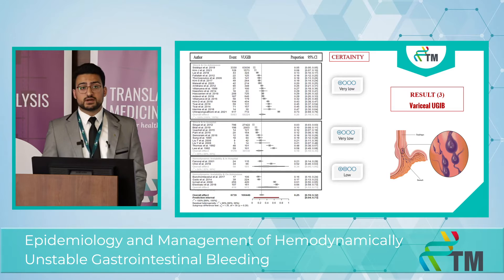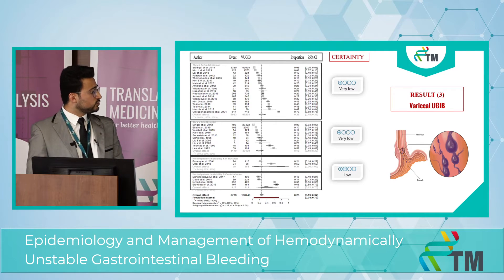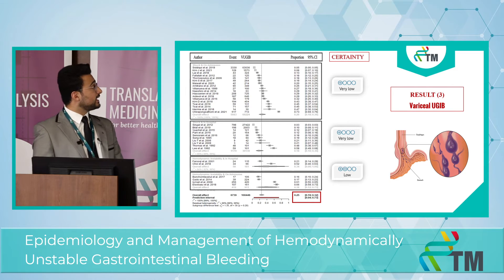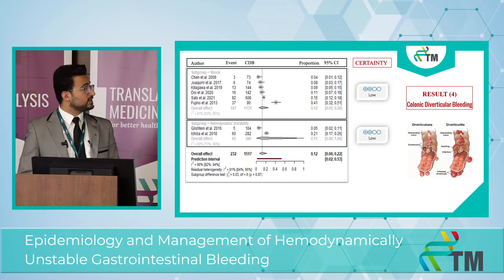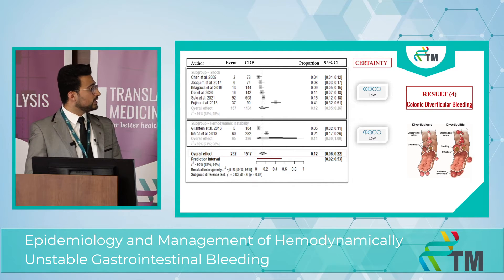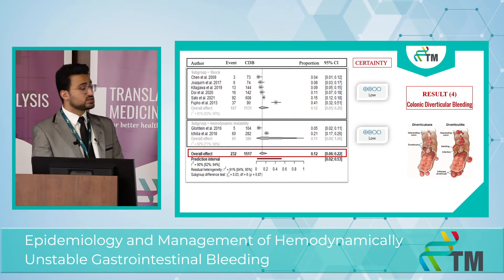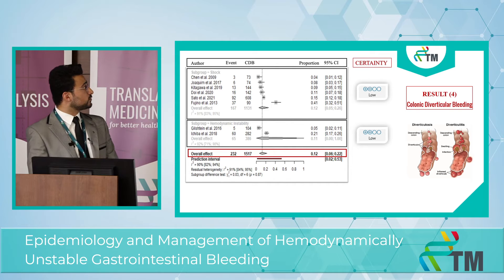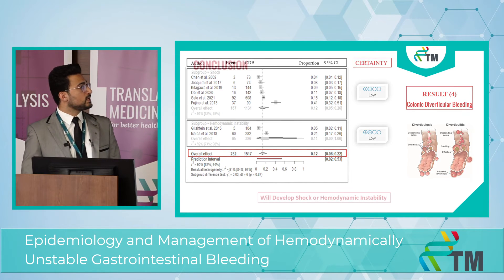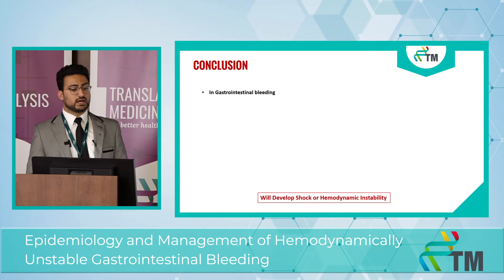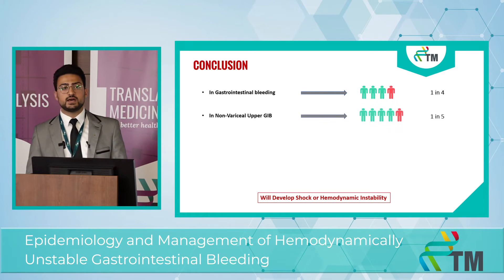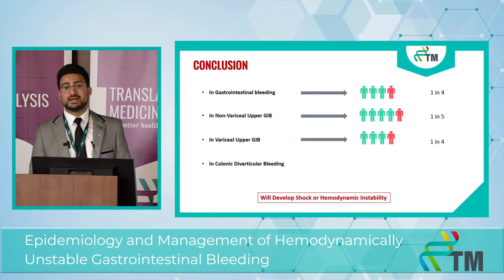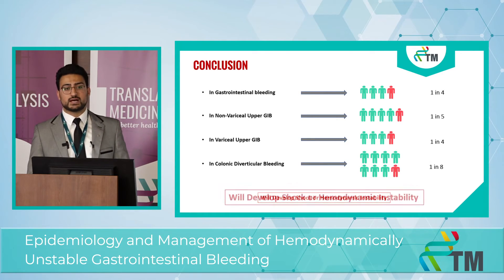In variceal bleeding, being a more severe bleeding type, we got 25% overall, and again shock on admission was much higher than during hospitalization. In colonic diverticular bleeding, the most common source of lower GI bleeding, only 12% of patients developed shock or hemodynamic instability on admission. As a conclusion: gastrointestinal bleeding overall is one in four patients; non-variceal upper GI bleeding is one in five; variceal is one in four; and colonic diverticular is one in eight.